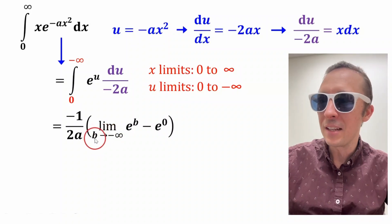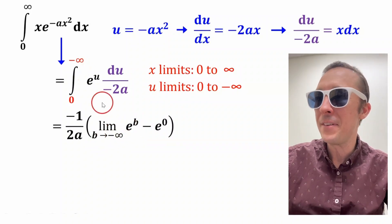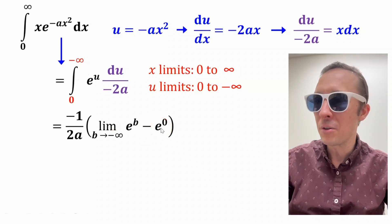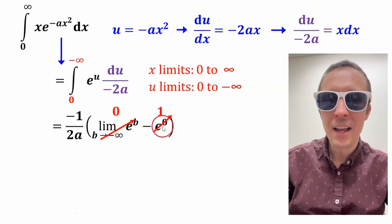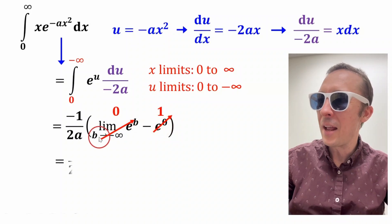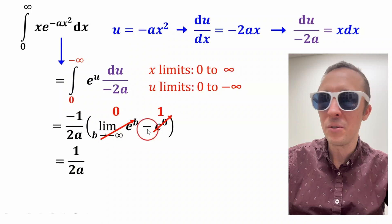Now, I set this up as a limit as some other variable, b goes to negative infinity of e to the b, because we can't just plug in infinity, minus evaluated at zero, so e to the zero. This limit term becomes zero. This right-hand term becomes one. Anything to the power of zero is one, and simplifying this becomes one over 2a, because these two negatives cancel.